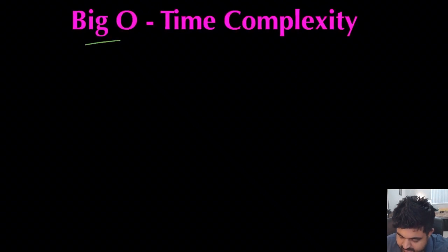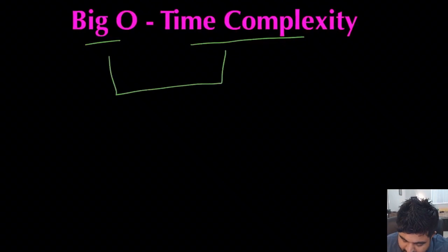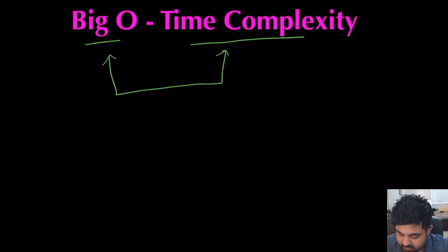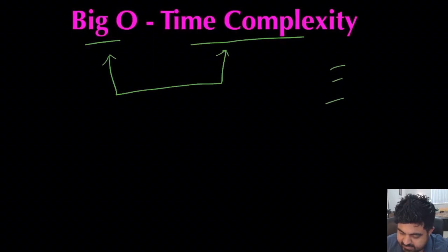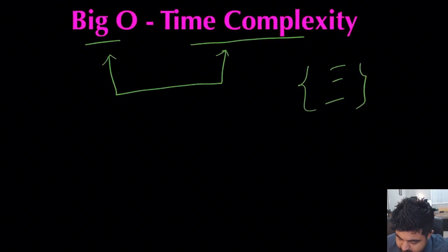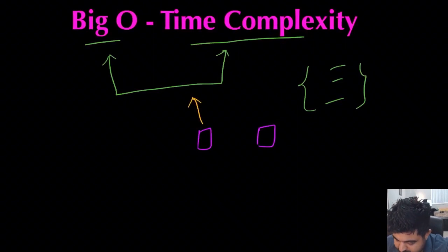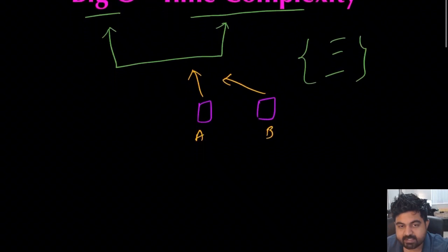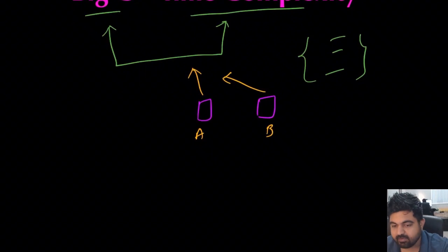If we have to define what Big O is or what time complexity means, it is a simple way for you to determine how efficient your solution is. It is a quantifiable measure that says your solution runs in this much time or it is dependent on these factors. Where it really shines is comparing two different solutions for the same problem — what would be the Big O of solution A versus solution B — and that gives you a clear indication on which solution to select.